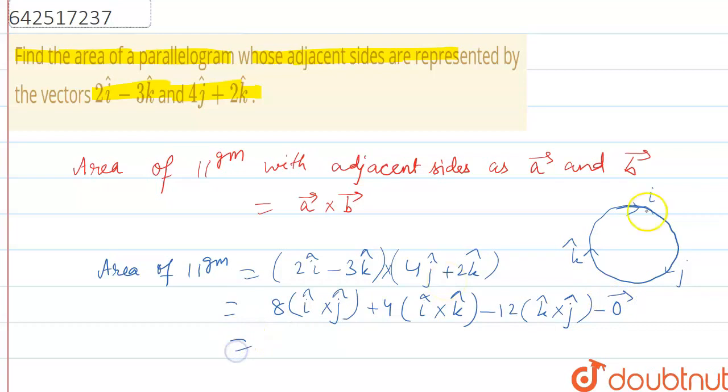Further, i cross j in this sense we have i cross j as k cap, 4k cap. So i cross k, i cross k in reverse order we have minus j cap, 4j cap. K cross j in reverse order we have minus i cap, so plus 12 i cap.